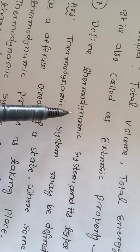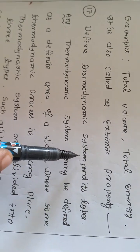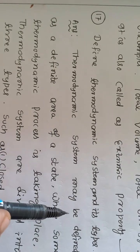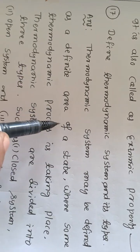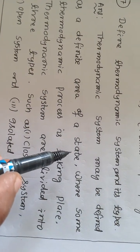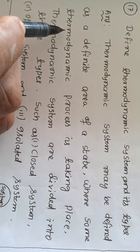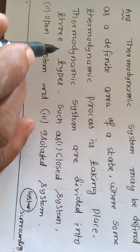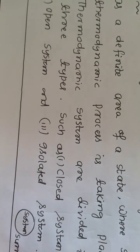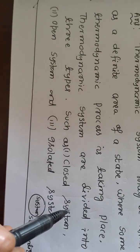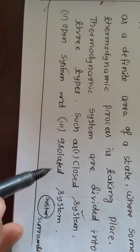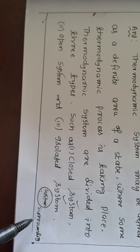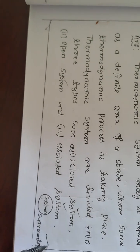Define thermodynamic system and its types. A thermodynamic system may be defined as a definite area or space where some thermodynamic process is taking place. Generally, it is divided into three types: closed system, open system, and isolated system.